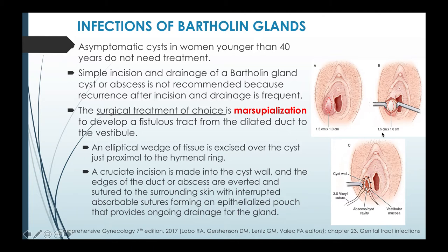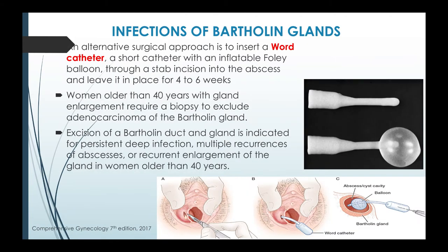After a few days or a week, this will secondarily heal once all the abscess is drained. An alternative surgical approach is to insert a Word catheter — a short catheter with an inflatable Foley balloon. A stab incision is made over the cyst wall, the catheter is inserted and left in place for four to six weeks. Women older than 40 years with gland enlargement require a biopsy to exclude adenocarcinoma of the Bartholin gland. Excision of the Bartholin duct and gland is indicated for persistent deep infection, multiple recurrences, or recurrent enlargement in women older than 40 years.